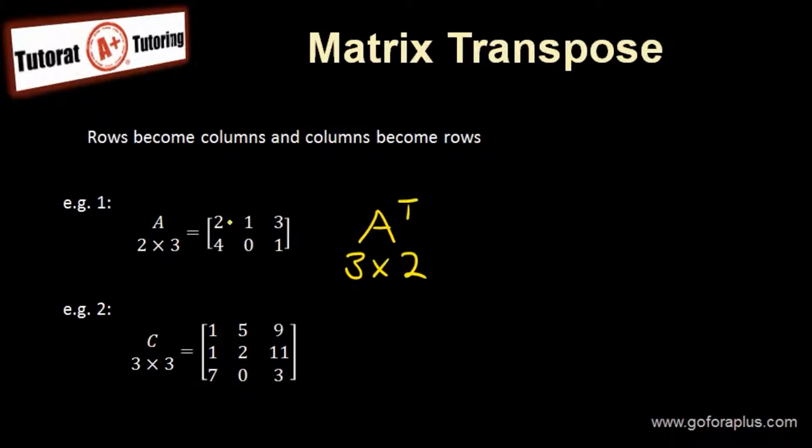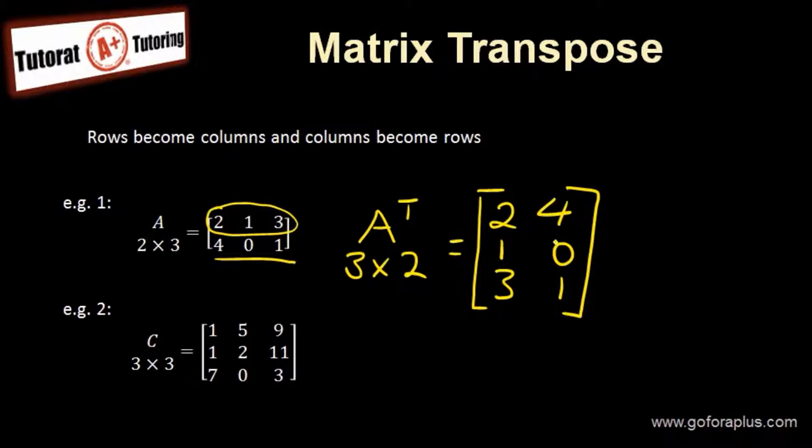The first row—two, one, three—becomes the first column. So two, one, three. The matrix looks like this. The second row is basically the second column: four, zero, one. So this is a 3 by 2 matrix.